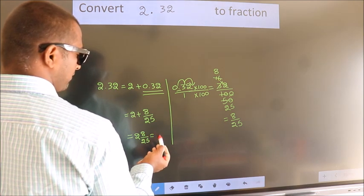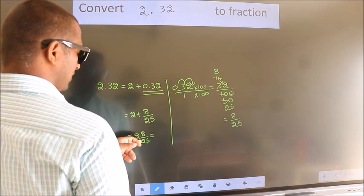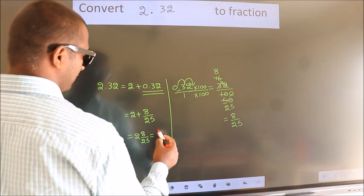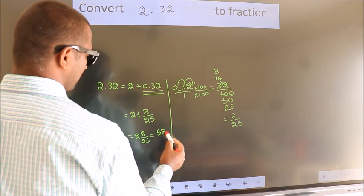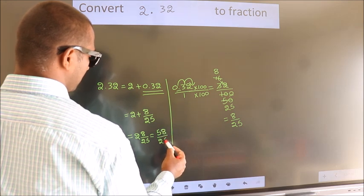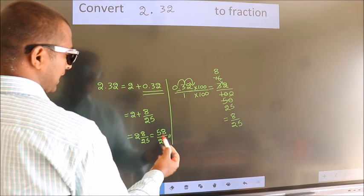In improper fraction, it is 2 into 25, 50 plus 8, 58 by 25. This is our fraction. Thank you very much.